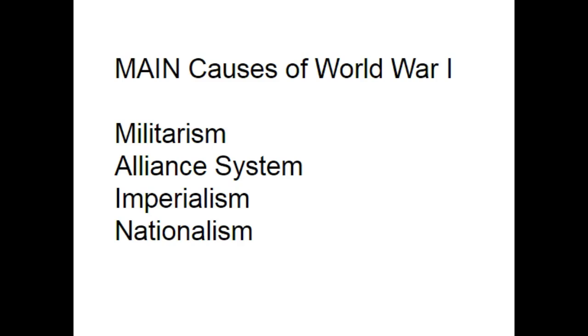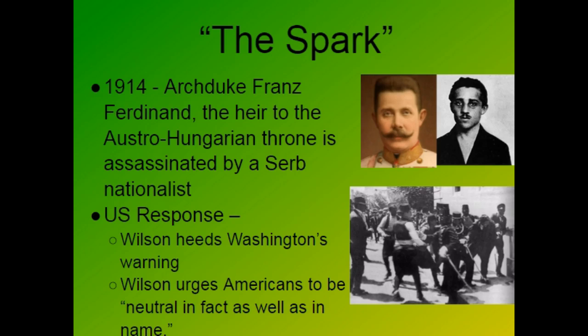Finally, the alliance system was a big issue because of secret alliances. Once Austria-Hungary goes to war, Germany is also going to war, which leads basically to all of Europe going into war. The spark for the war is that the heir to the Austro-Hungarian throne is assassinated by a Serb nationalist, Gavrilo Princip. Austria-Hungary then gives Serbia a series of demands that are near impossible to meet. Serbia doesn't meet them, and war ensues.